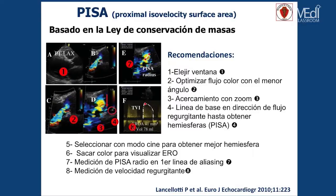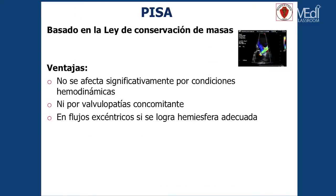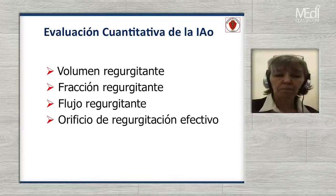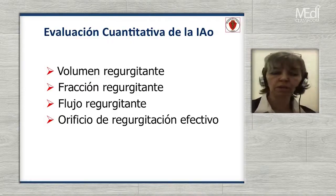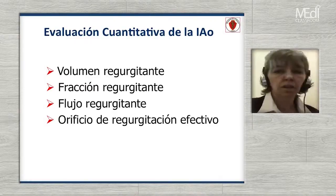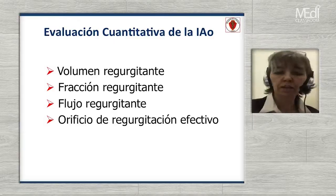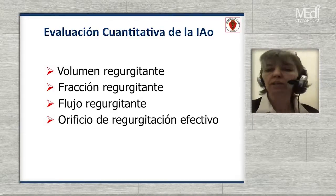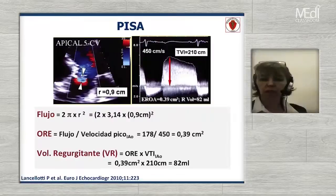Otro dato que necesitamos es el flujo por Doppler continuo del jet de regurgitación. La ventaja de este método está basada en la ley de conservación de masas y es lo que menos se afecta por las condiciones hemodinámicas u otras valvulopatías concomitantes. A partir de estos datos calculamos: el volumen regurgitante, la fracción regurgitante, el flujo regurgitante y el orificio regurgitante efectivo.